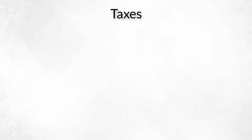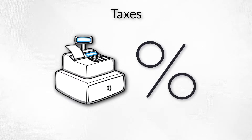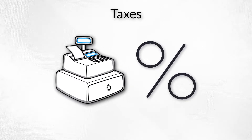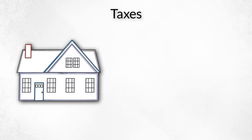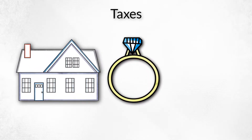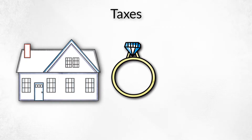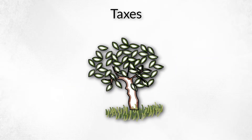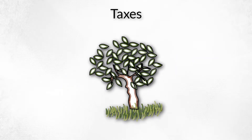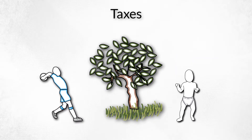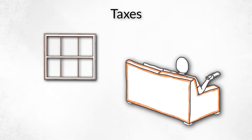A tax is often assessed as a percentage of something — for example, a home's assessed value, a product's price, or yearly income. An individual taxpayer's consumption of public goods is not precisely measurable. For example, one cannot precisely measure a taxpayer's increased safety derived from the existence of police.